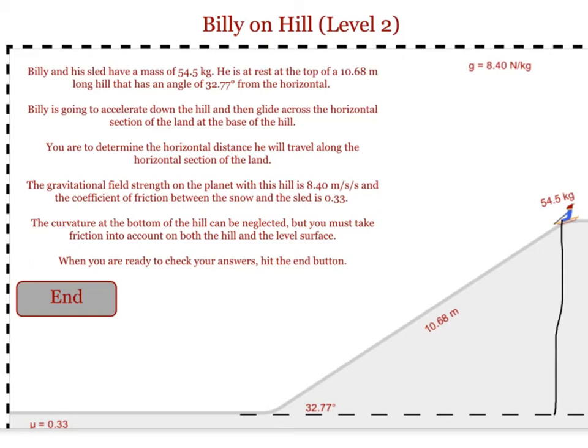Finally, you find the work done by friction as Billy moves along the hill. You do that by taking the friction you just found and multiplying it by the length of the hill. This work done by friction will take away mechanical energy from our system.